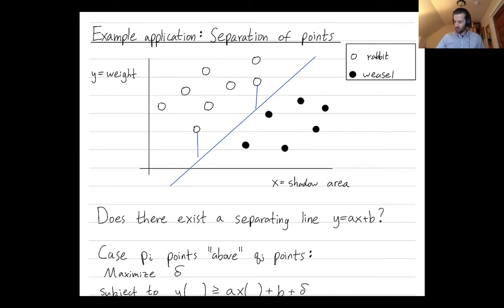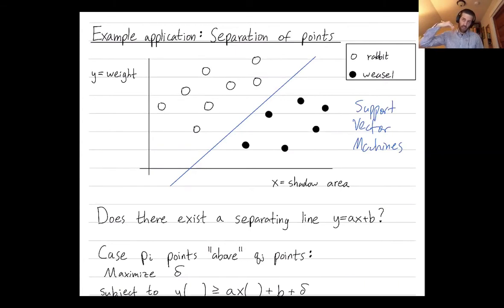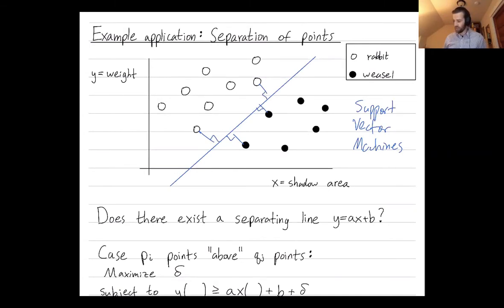Perhaps you've heard of support vector machines before — they are a classic algorithm in machine learning. Support vector machines, when your points are linearly separable, find the dividing line that maximizes the minimum perpendicular distance. That's a more realistic application, but we won't go that deep today. We're just trying to decide: are these points separable by a line or not?